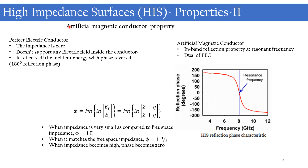The next property of high impedance surfaces is the artificial magnetic conductor property. First, let's consider the property of metals or perfect electric conductors. The impedance offered by a metal is zero, they do not support any electric field inside the conductor, and when a wave is incident on a metallic plate it will be reflected back with a 180-degree reflection phase.